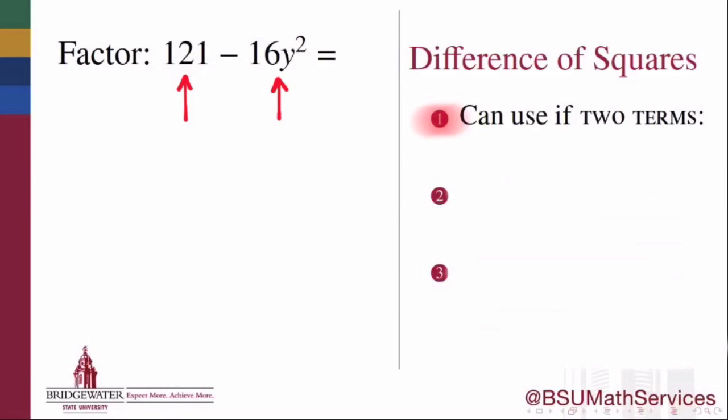In other words, each of the two terms which is being subtracted must be a perfect square of something.